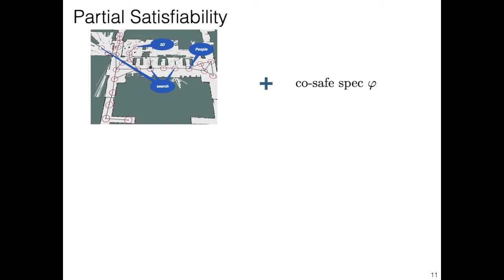So now we have an MDP model of the robot and its environment and we have a Cosafe LTL specification that we want the robot to achieve. In this paper, we investigate how to handle partially satisfiable tasks, i.e. tasks that cannot be satisfied with probability 1. To tackle these tasks, we propose posing the problem as an optimization of a set of objectives in a decreasing order of priority.